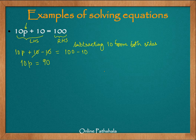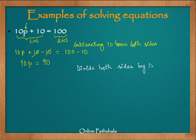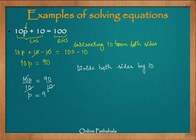So our next step is to divide both sides by 10. So what we have is 10p divided by 10 equals 90 divided by 10. This gets cancelled. So we get p equals 9 because this is 9.